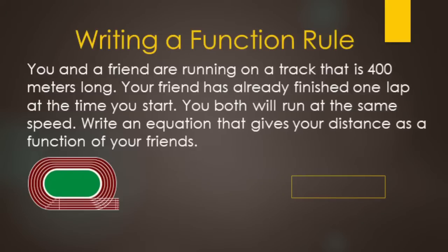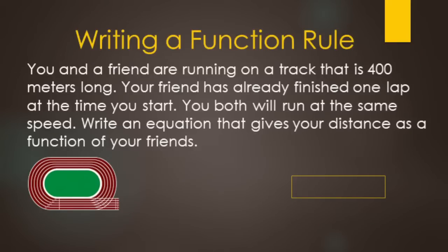In this video we are going to be writing function rules. This is a skill we have worked on in previous lessons, but we are going to be including some more vocabulary. You and a friend are running on a track that is 400 meters all the way around per lap. Your friend has already finished one lap at the time you start, and you're both going to run at the same speed. Write an equation that gives your distance as a function of your friend's.